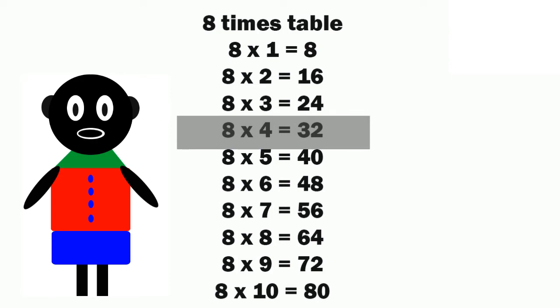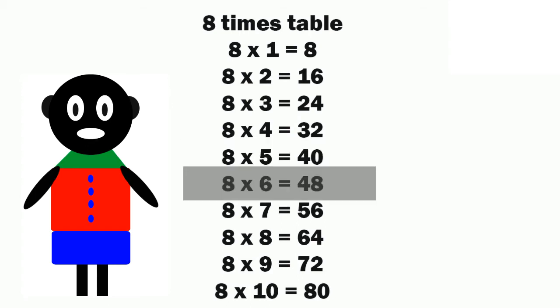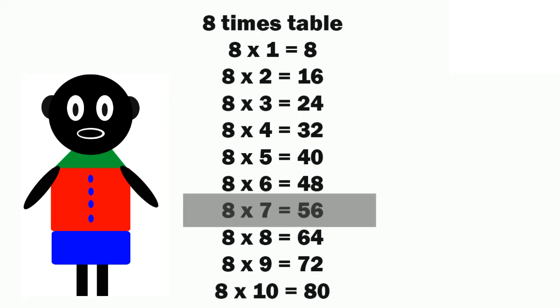8 times 4 is equals to 32. 8 times 5 is equals to 40. 8 times 6 is equals to 48. 8 times 7 is equals to 56.